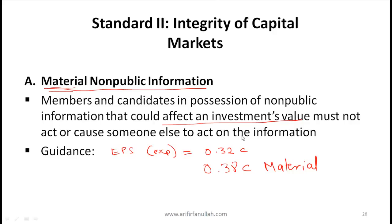If the information you have is going to potentially have an ambiguous effect on the price — meaning the information could either cause the price to go up or the price to go down — then that information is not going to be considered material.